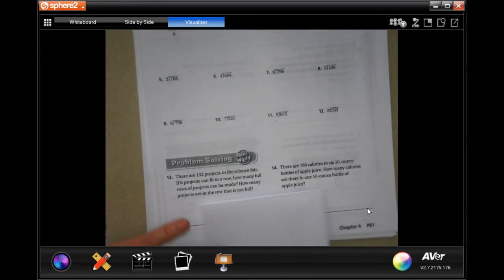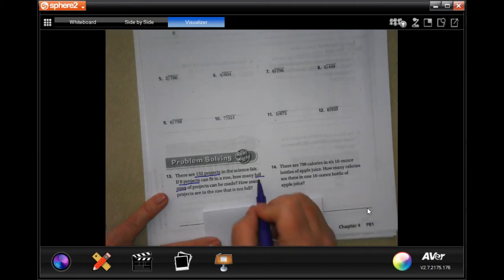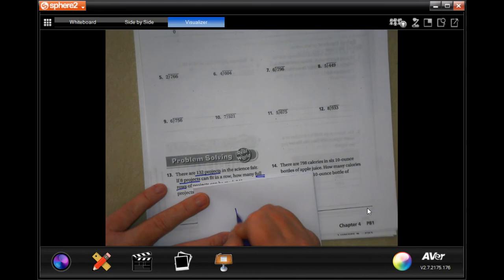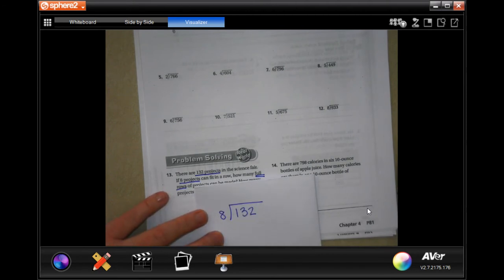We're going to go down to number 13 and it says there are 132 projects in the science fair. If eight of the projects can fit in a row, how many full rows? So full, not remainder. How many full rows? And then how many projects are in the row that is not full? So then it wants the remainder. So 132 divided by eight. 132 projects, eight projects in a row.